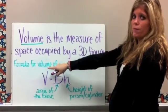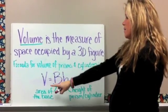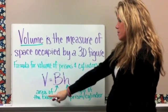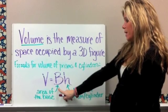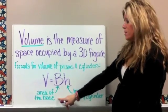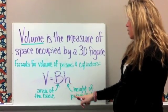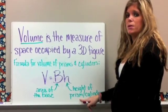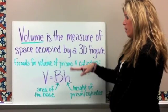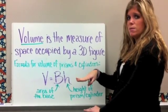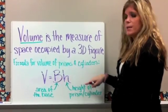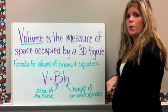The formula is also very important for volume, and that's going to be capital V, which is volume, equals capital B, which is the area of the base, times H, which is the height of the prism or cylinder. Your height is going to be the height between the two bases. Go ahead and pause it if you need to write this down in your Cornell notes, this is very important.